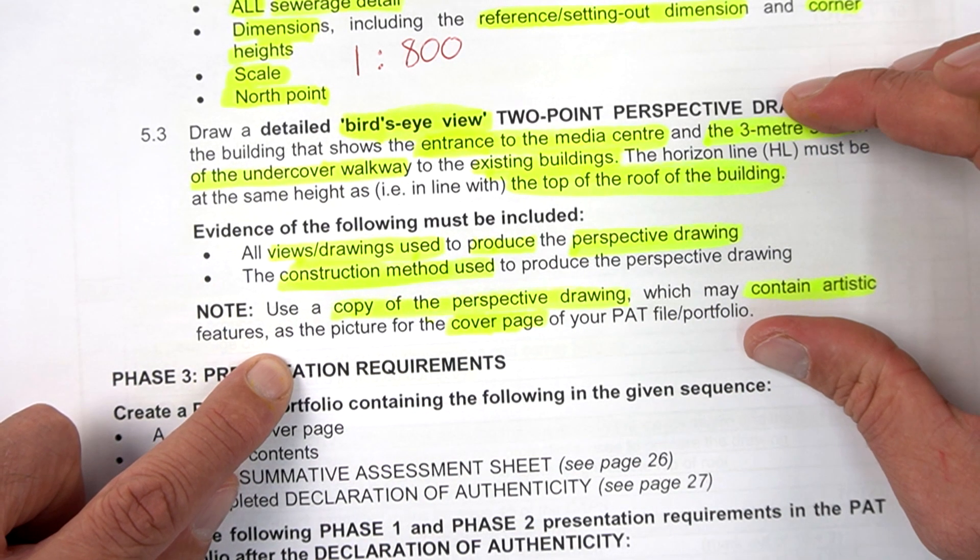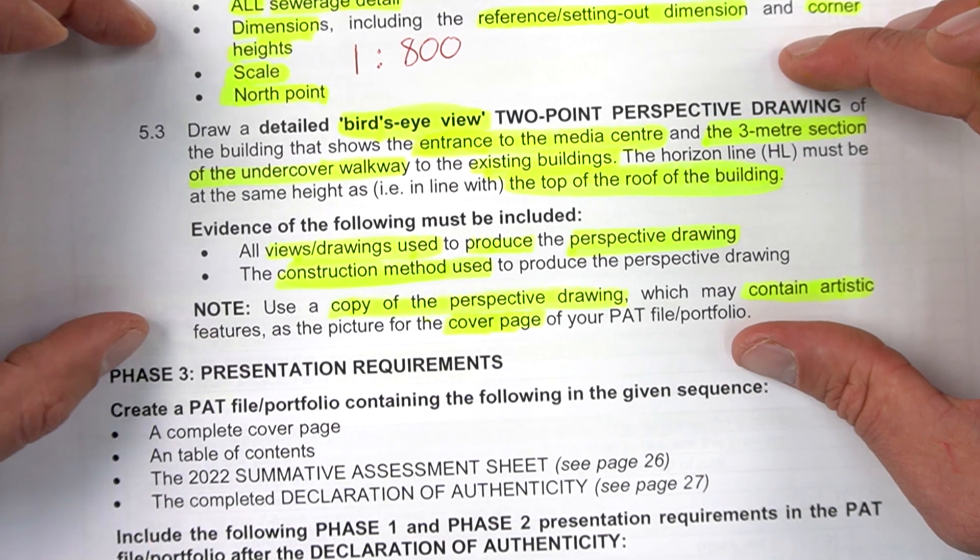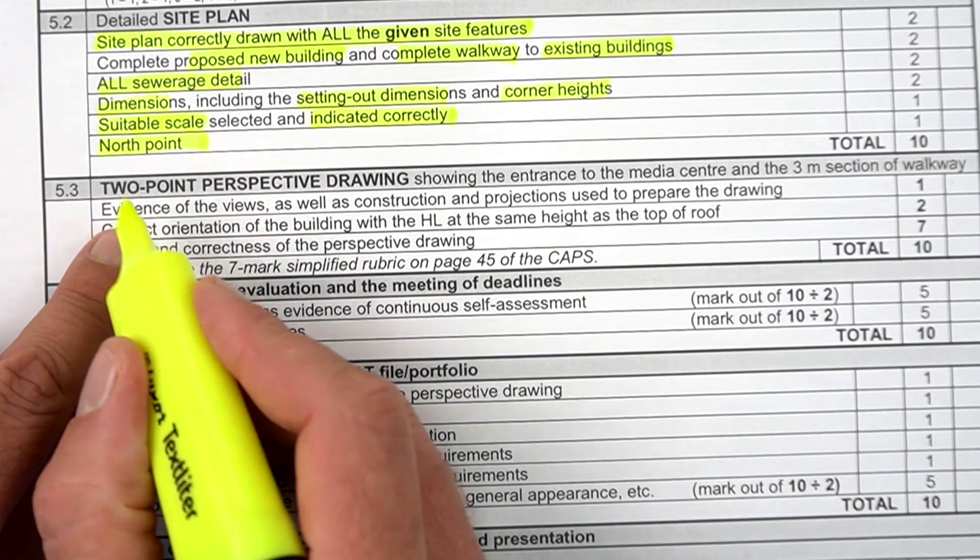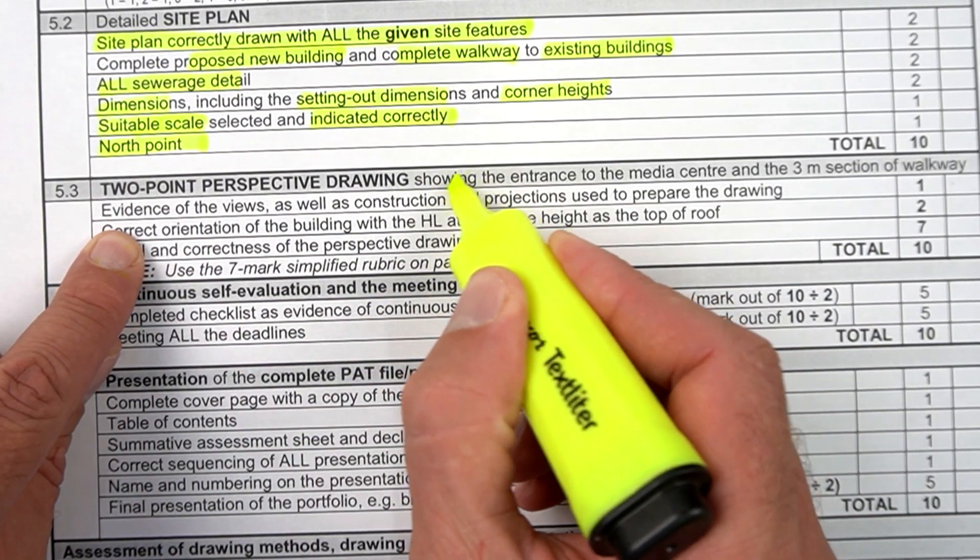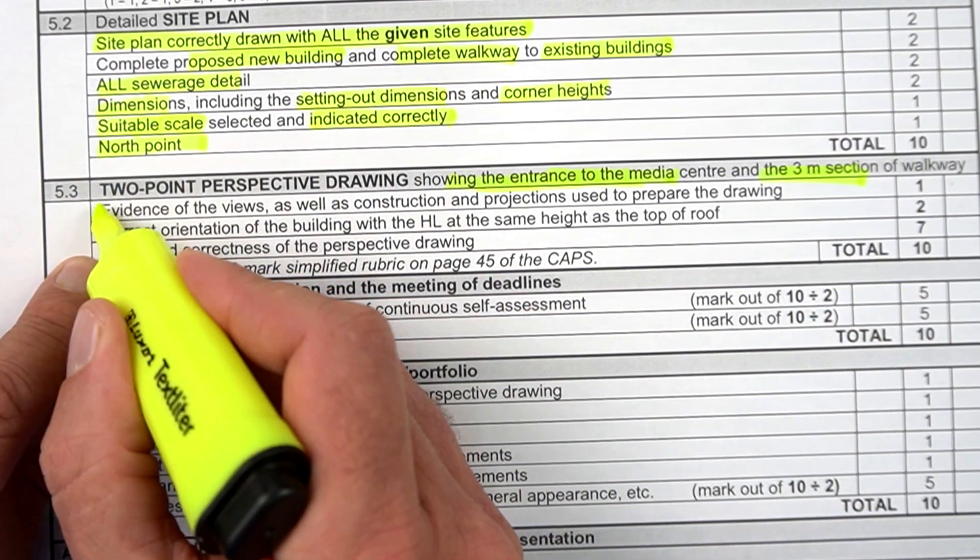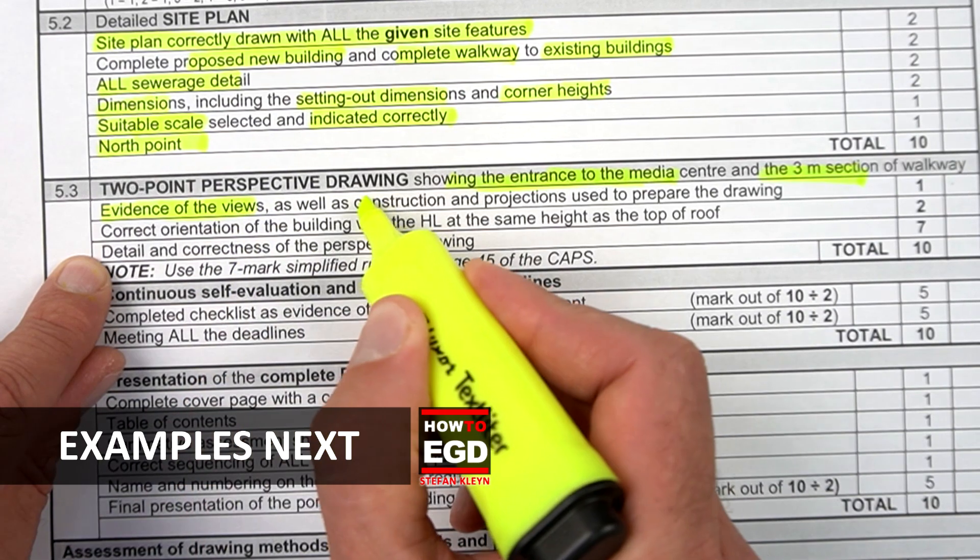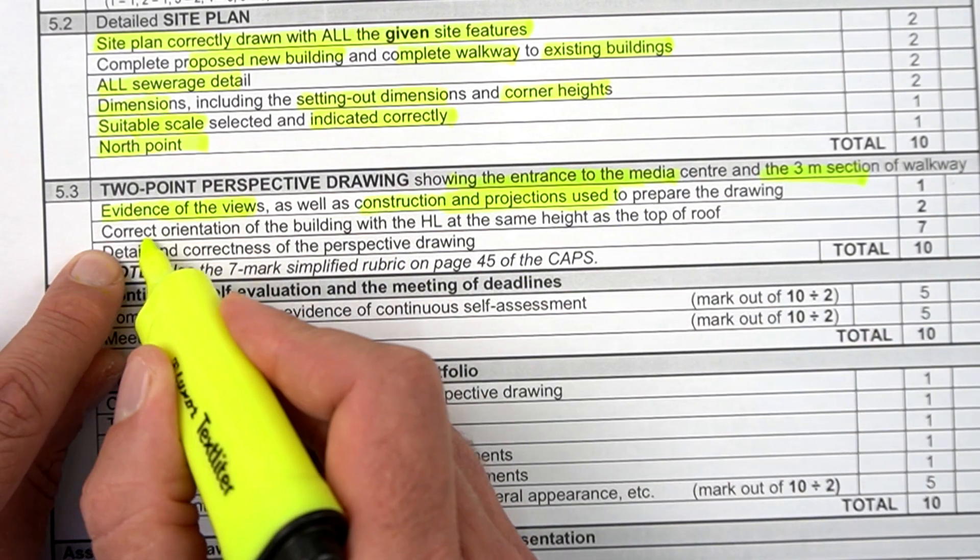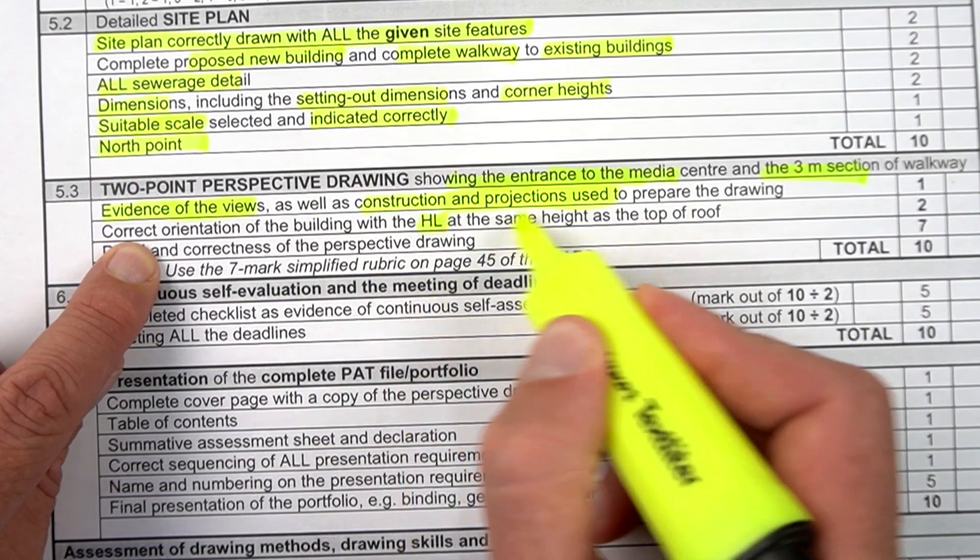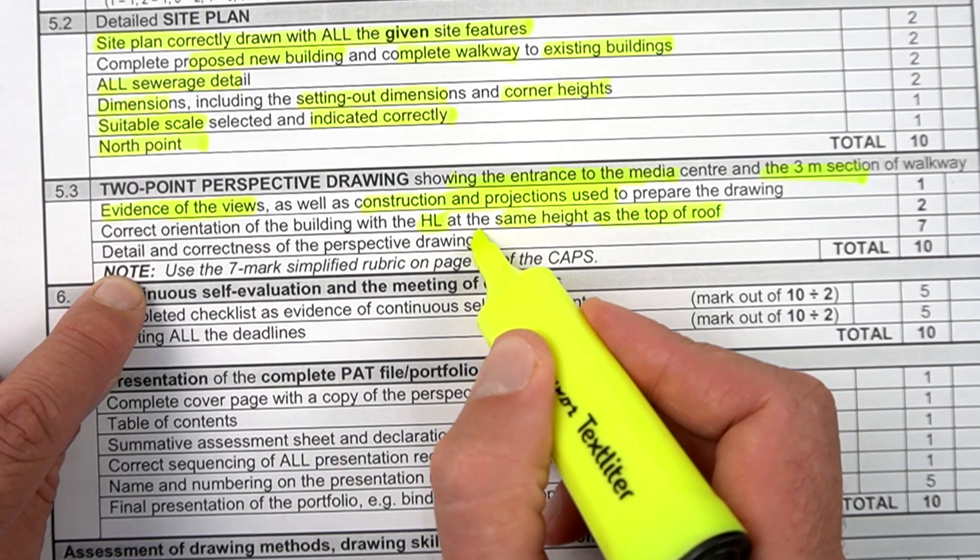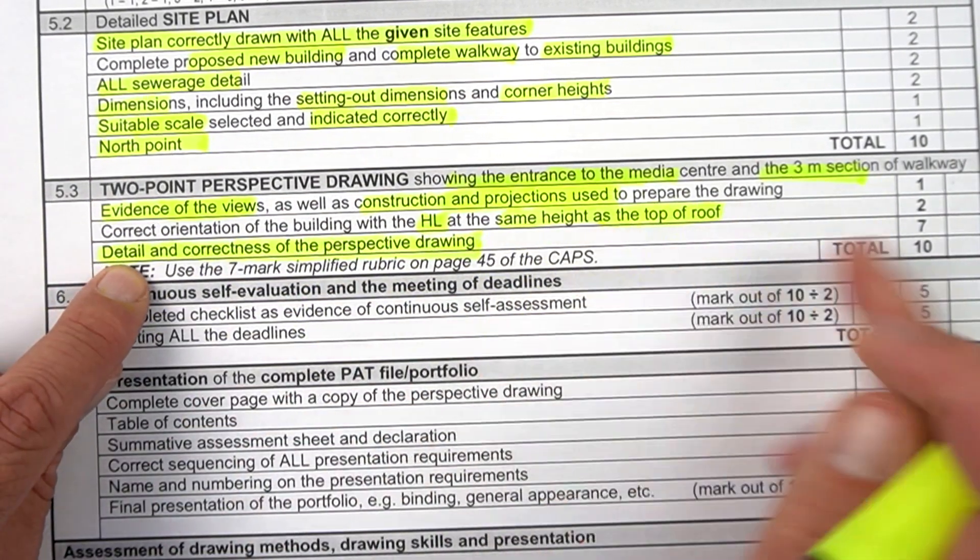That's what is detailed here at 5.3. Let's look at the checklist that corresponds with that. So again, two-point perspective showing the entrance to the media center as well as the three meter section of the walkway, the evidence of the views used as well as construction and projections used to prepare the drawing, correct orientation of the building with HL at the same height as the top of the roof, detail and correctness of the perspective drawing. That's going to be most of your marks here.